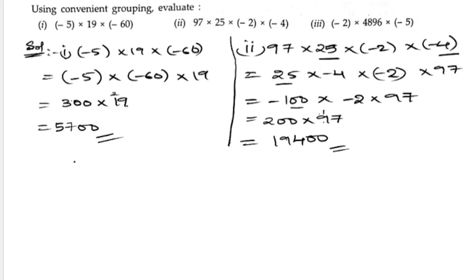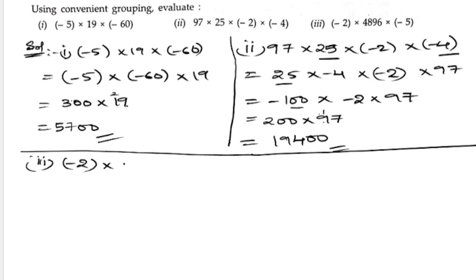Now let us take the third part: (-2) × 4896 × (-5). Here I want to take (-2) and (-5) first: (-2) × (-5) × 4896. Minus 2 times minus 5 is plus 10, times 4896.